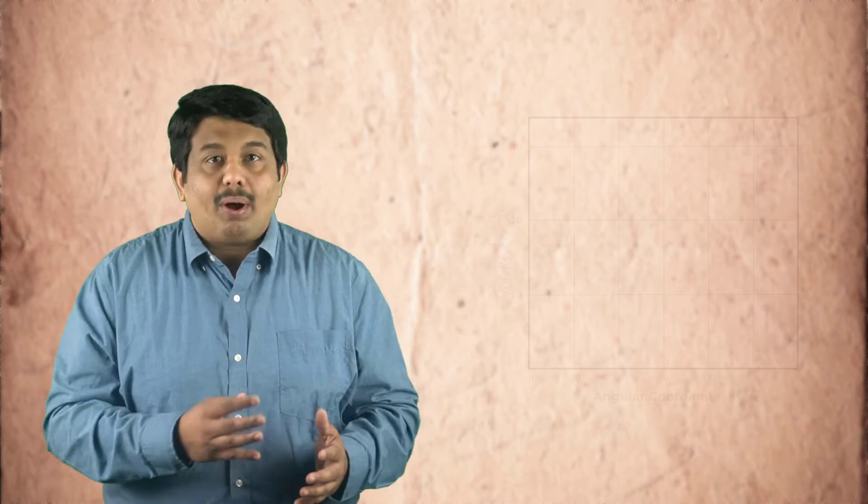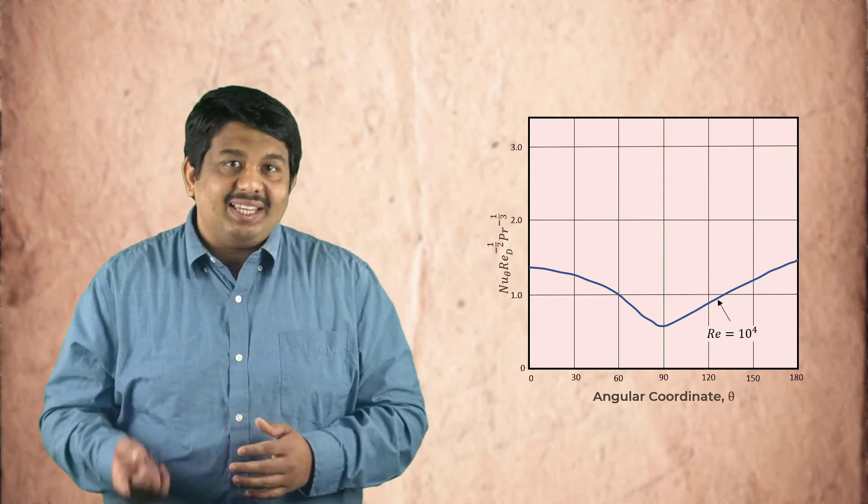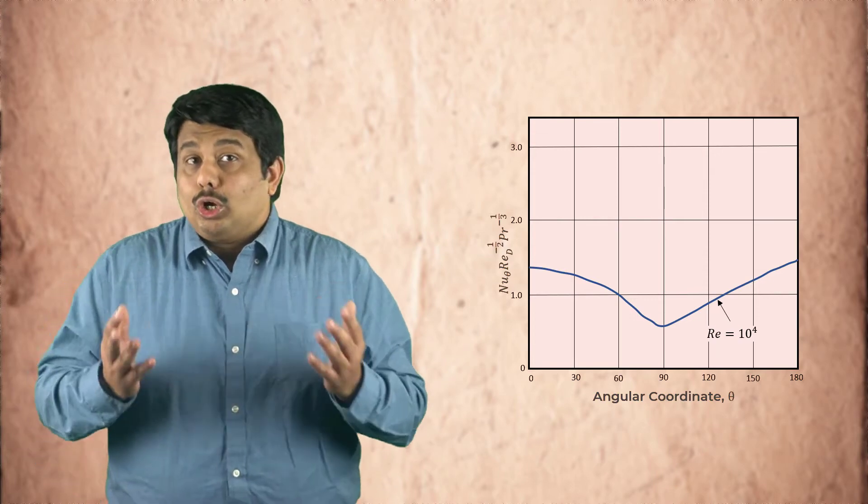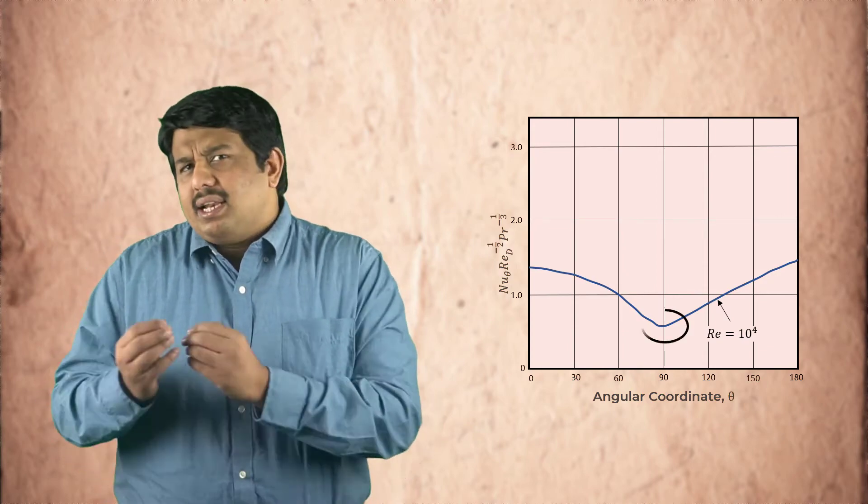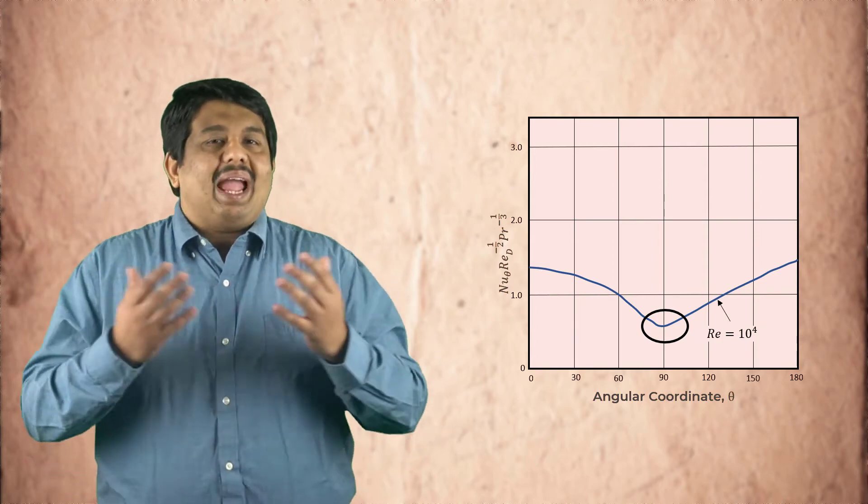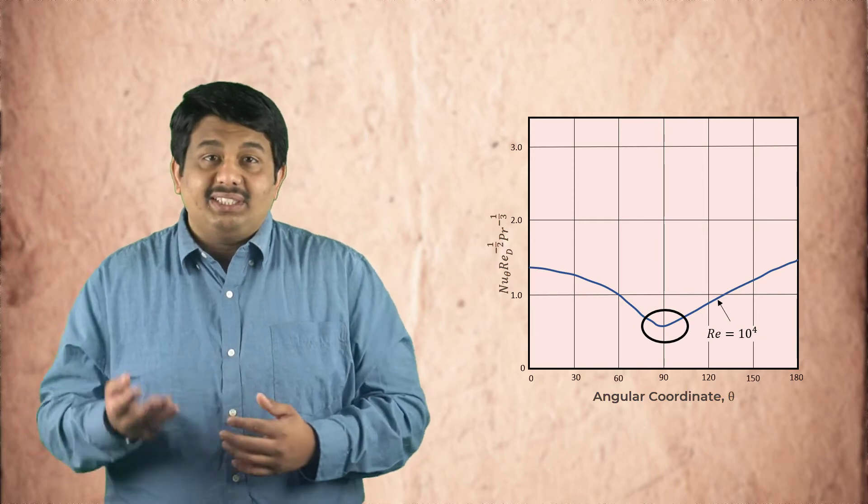The convection heat transfer levels are also significantly influenced by the nature of the boundary layer. For Reynolds numbers less than 100,000, where the boundary layer is entirely laminar, the local Nusselt number decreases with increasing circumferential angle. Close to the separation location, around theta equals 80 degrees, the Nusselt number attains its minimum value. However, due to enhanced mixing from the vortices in the separated flow, the Nusselt number starts to increase.